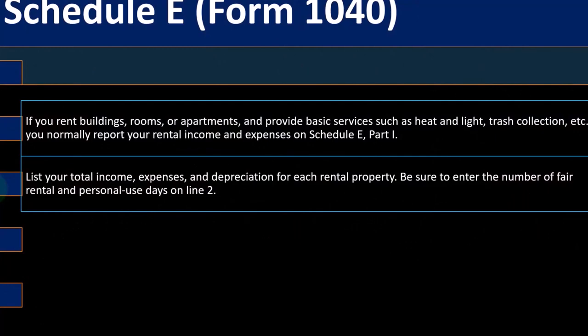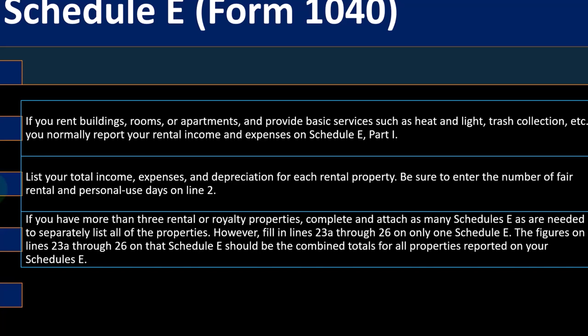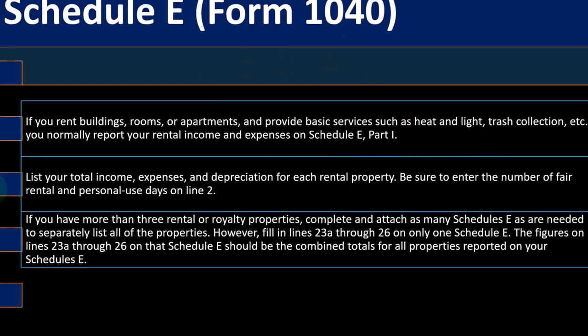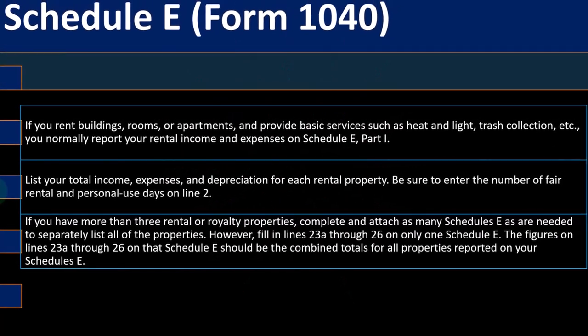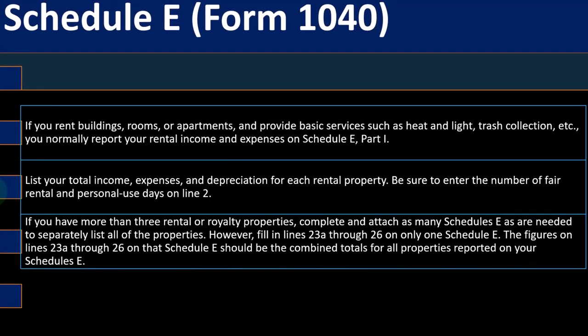You've got to break out the business versus personal use, as opposed to a property that's rented 365 days a year, which is more straightforward. If you have more than three rental or royalty properties, complete and attach as many Schedule E's as needed to separately list all the properties.